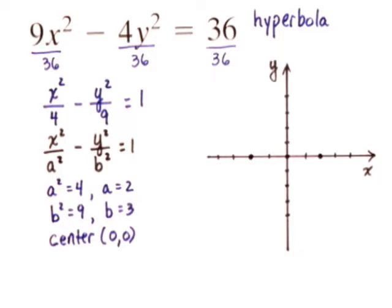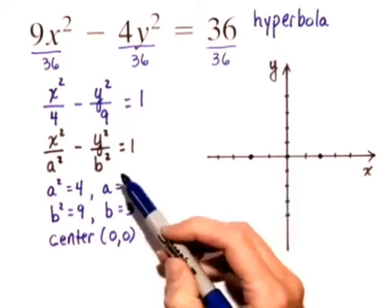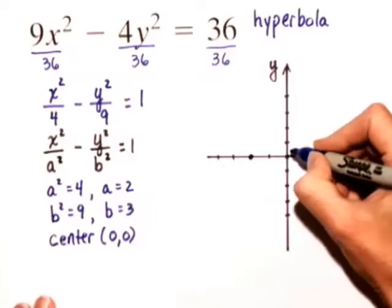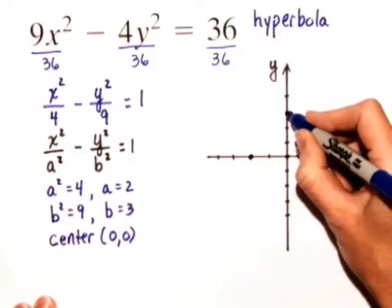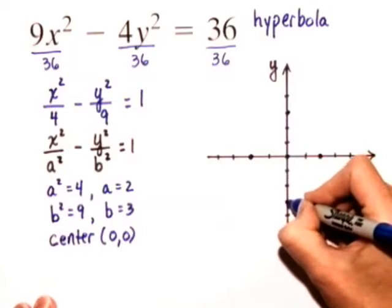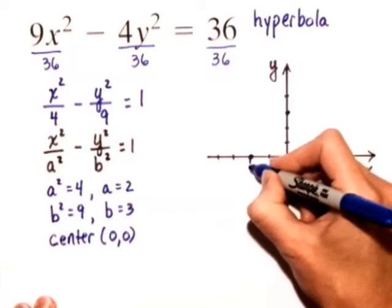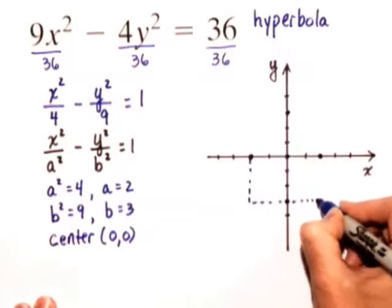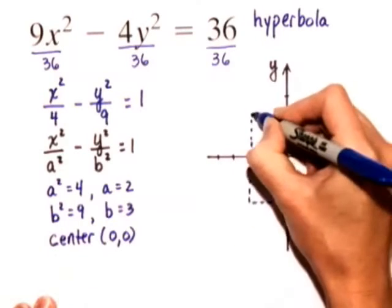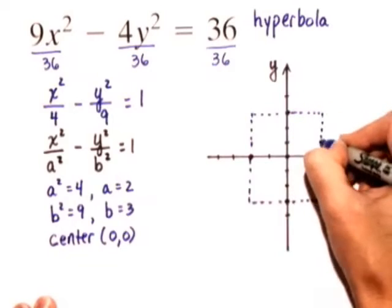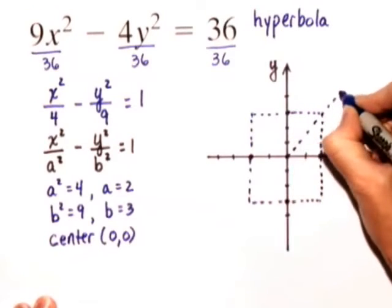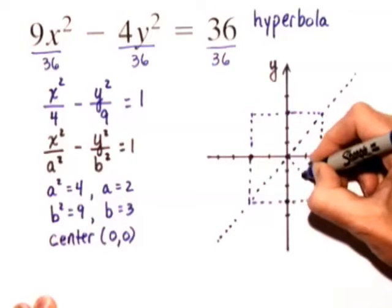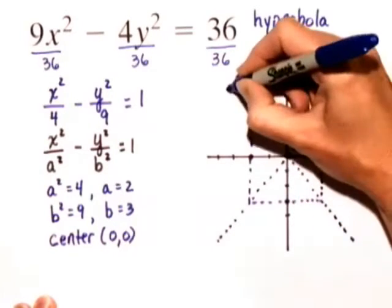In order to graph this hyperbola from the center, we'll also go 3 units up and 3 units down along the y axis, because b is equal to 3. And then we'll draw a rectangular box containing those four points that I just graphed, and we'll draw diagonals through the corners of this rectangular box. These diagonals are the asymptotes that will help us draw the hyperbola.